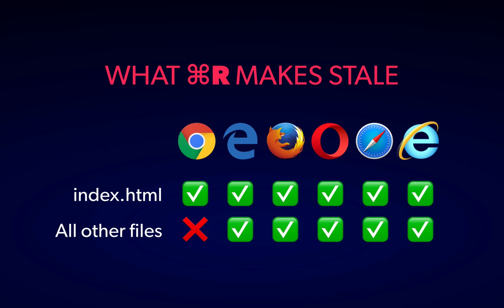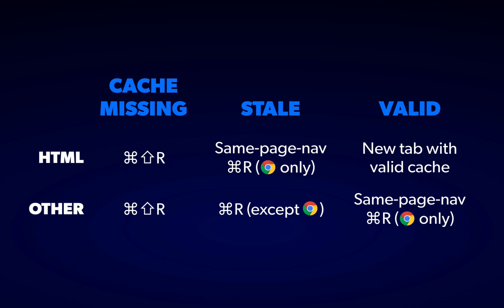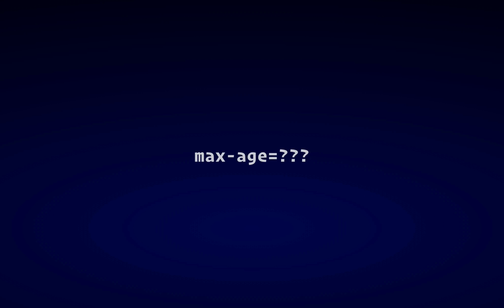You probably already know instinctively that to fix it, you hold shift when refreshing, which ignores the locally cached version and goes back to the server for the full data. But very few of your customers are going to know that shortcut, and even fewer will try it if your site is broken — most will simply leave and never return. That's specific to Chrome, by the way. Other browsers will revalidate all resources when you reload, but that may be changing. Recently, there's been discussion about whether reloads should be considered the same as a same-page navigation, where only revalidating one resource is much faster, particularly on mobile networks.